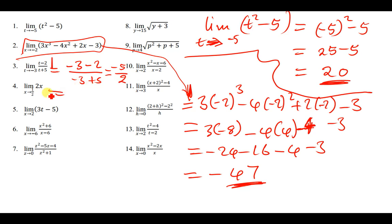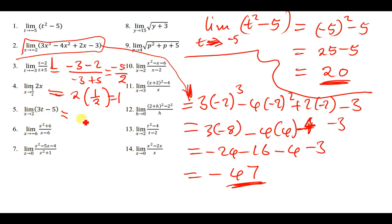For the next example, we replace x with 1/2. We get 2 times 1/2, which gives 1. For the following example, we replace t with 2: we get 3(2) - 5 = 6 - 5 = 1. So the answer is 1.